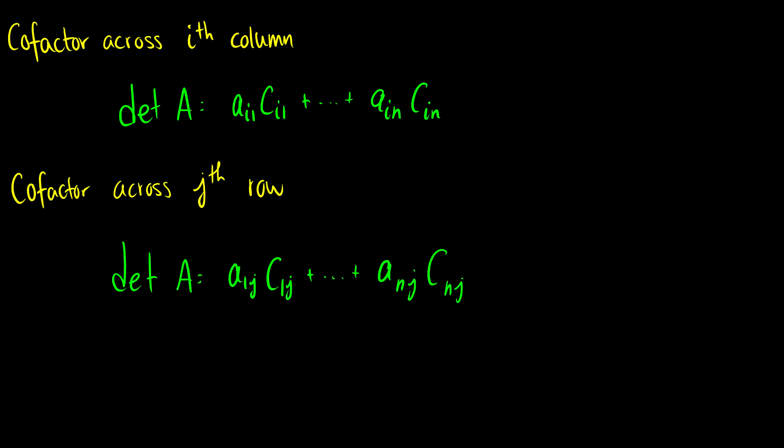So now we can do cofactor expansion to find the determinant along the ith row or across the jth row. We can do cofactor expansion wherever we want.